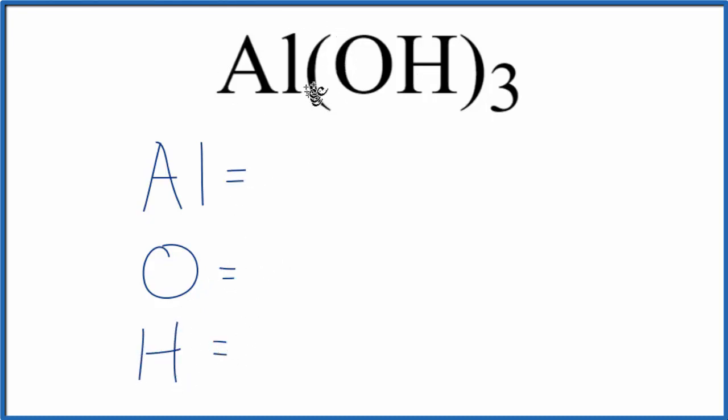For aluminum, there's nothing written after it, no subscript. We assume that to be one, so we have one aluminum atom. The same for oxygen and hydrogen. Nothing's written after them, so we have one of each.